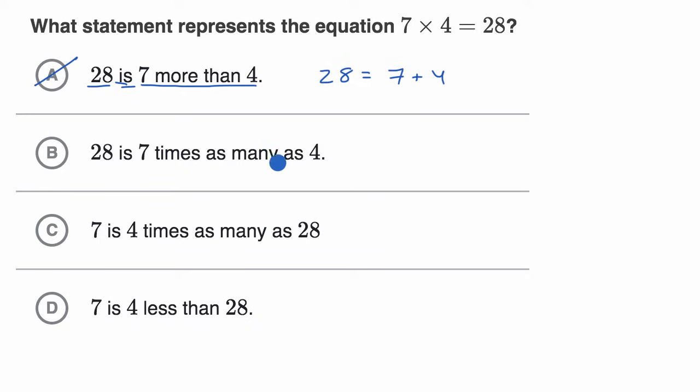28 is seven times as many as four. Well, this is interesting. 28 is equal to seven times as many as four, which is seven times four. Well, the only difference between this and this is just we've swapped the sides on the equality, which is completely okay. So 28 is equal to seven times four. That's the same equation, really, as seven times four is equal to 28. So I like this choice.